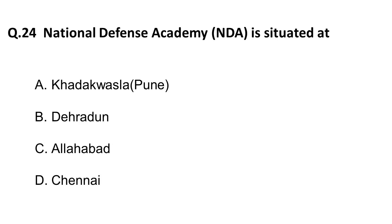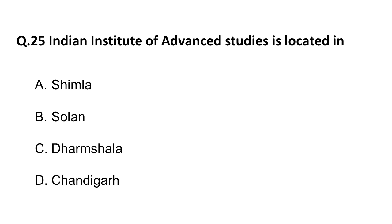The next four or five questions are on institutes of national importance and their locations. The 24th question: National Defense Academy is situated at — options are Khadagwasla Pune, Dehradun, Allahabad, Chandigarh. The correct answer is Khadagwasla, Pune. Next: Indian Institute of Advanced Studies is located in — options are Shimla, Solon, Dharamshala, Chandigarh. The correct answer is Shimla.